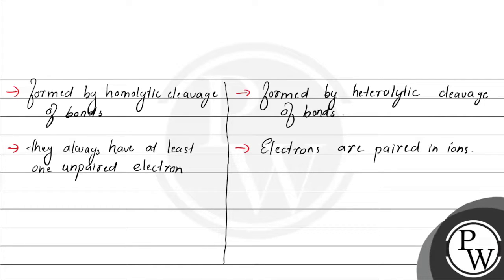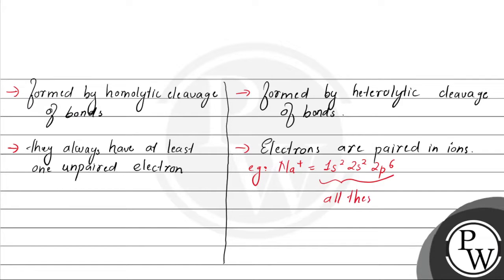Koi bhi unpaired electron present nahi hote hain ions mein. For example, sodium positive ion ka electronic configuration hai 1s2, 2s2, 2p6. Aur yis electronic configuration mein, all these electrons are paired. Ions mein sare electrons paired hote hain, aur joh free radicals hain, unpe unpaired electron present hote hain.